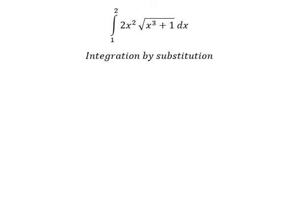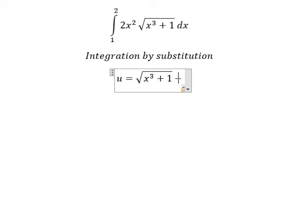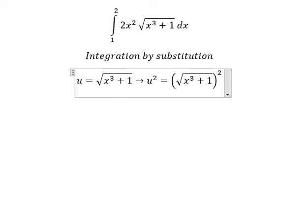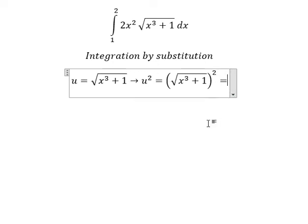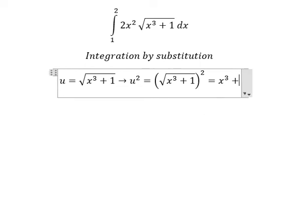I need to put u equals to the square root of s to the power of three plus one. Then we square both sides to cancel the square root, and we get s to the power of three plus one.